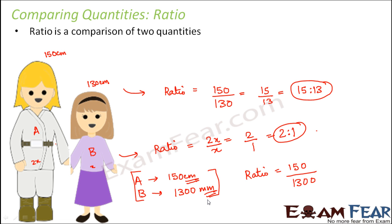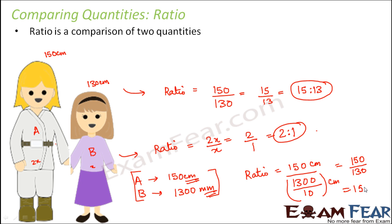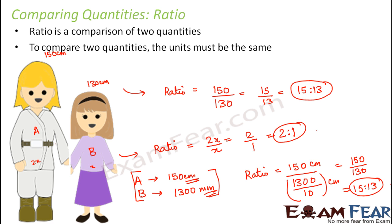Units play a very important role when we talk about ratio. In this case, we will convert one measurement into the other unit so that both heights are in the same unit. Let's convert to centimeters — 150 is already in centimeters, and 1300 mm divided by 10 gives 130 cm. So the ratio becomes 150 by 130, which is 15 is to 13. Very important point: to compare two quantities, their units must be the same.